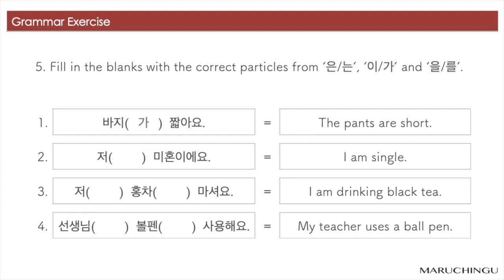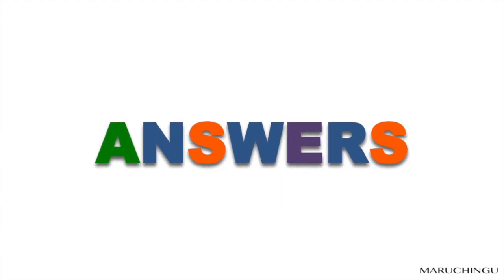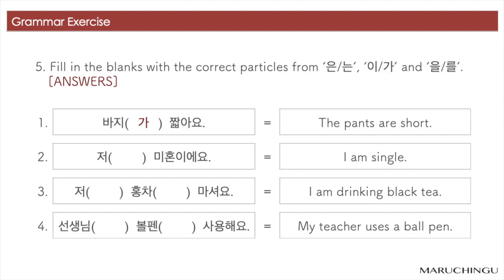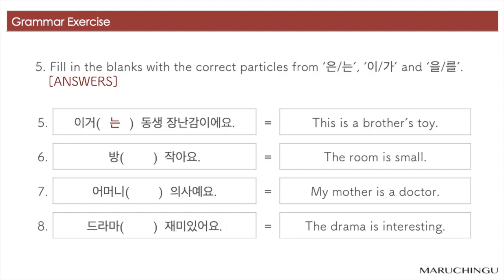Question 5: Fill in the blanks with the correct particle from 은/는, 이/가, 을/를. 1번. 바지가 짧아요. 2번. 저는 미혼이에요. 3번. 저는 홍차를 마셔요. 4번. 선생님은 볼펜을 사용해요. 5번. 이거는 동생 장난감이에요. 6번. 방이 작아요. 7번. 어머니는 의사예요. 8번. 드라마가 재미있어요.